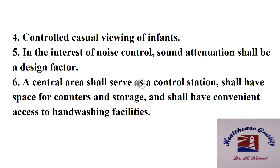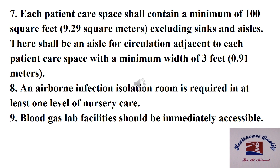Controlled casual viewing of infants — in the interest of noise control, sound attenuation shall be a design factor. A central area shall serve as a control station, shall have space for counters and storage, and shall have convenient access to hand washing facilities. Each patient care space shall contain a minimum of 9.3 square meters, excluding sinks and alcoves. There shall be an alcove for circulation adjacent to each patient care space with a minimum of 1 meter. An airborne infection isolation room is required in at least one level of nursery care. Blood gas lab facilities should be immediately accessible.